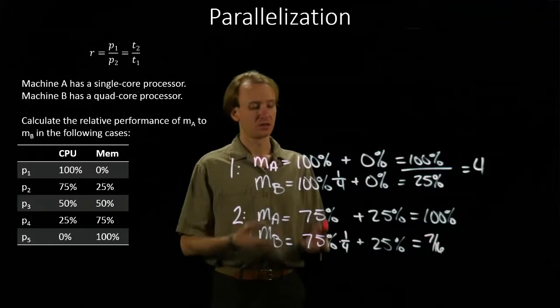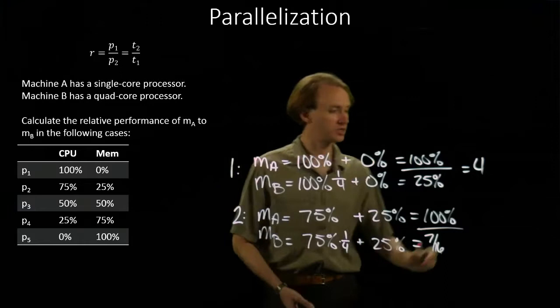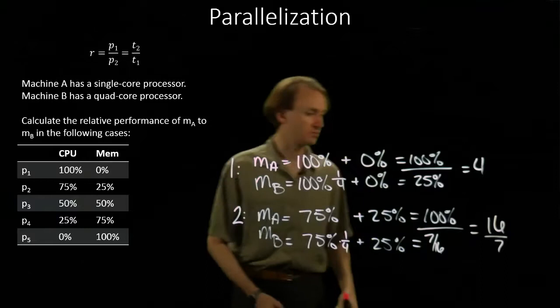Or again, I can put this into a relative performance ratio and say that Machine B is sixteen-sevenths times faster. So slightly more than two times faster than Machine A.